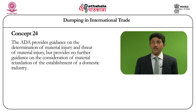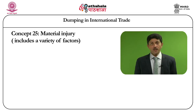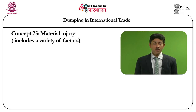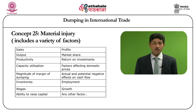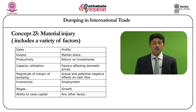The Anti-Dumping Agreement provides guidance on the determination of material injury and threat of material injury, but it provides no further guidance on the consideration of factors for the determination of material retardation of the establishment of the domestic industry. Article 3.4 of the Anti-Dumping Agreement provides a list of 15 factors for material injury determination. These include sales, output, productivity, capacity utilization, magnitude of dumping margin, inventories, wages, ability to raise capital, profit, market share, return on investment, factors affecting domestic prices, actual and potential negative effects on cash flow, employment, growth, and any other relevant factor. These factors include both economic and non-economic considerations.